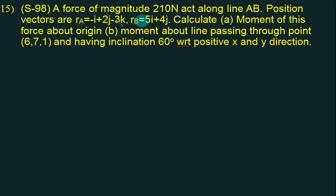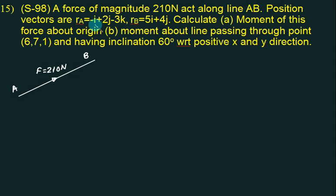In this problem, we have given a force of 2, 1, 0 acting along a line AB. The position vector RA is minus i plus 2j minus 3k, meaning the coordinate of point A is minus 1, 2, minus 3.